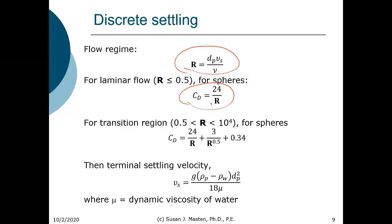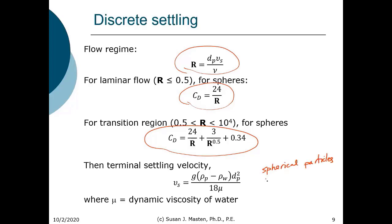For the transition region between laminar flow and turbulent flow, the coefficient of drag is a more complicated equation and is again a function of Reynolds number. Reynolds number is defined as the ratio of the momentum forces to the viscous forces, and it defines the relative importance of these two types of forces for given flow conditions. For spherical particles in laminar flow, the terminal settling velocity is a function of gravitational acceleration, the difference in density between particle and water, the particle diameter squared, and the dynamic viscosity of water. This is Stokes law.